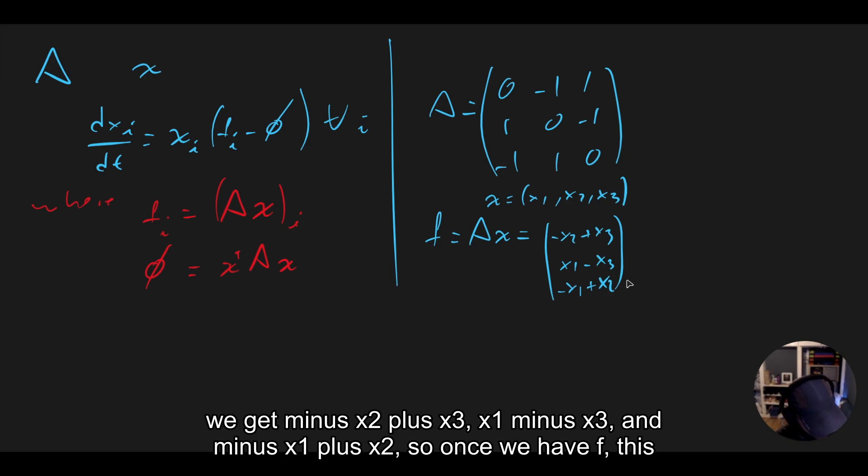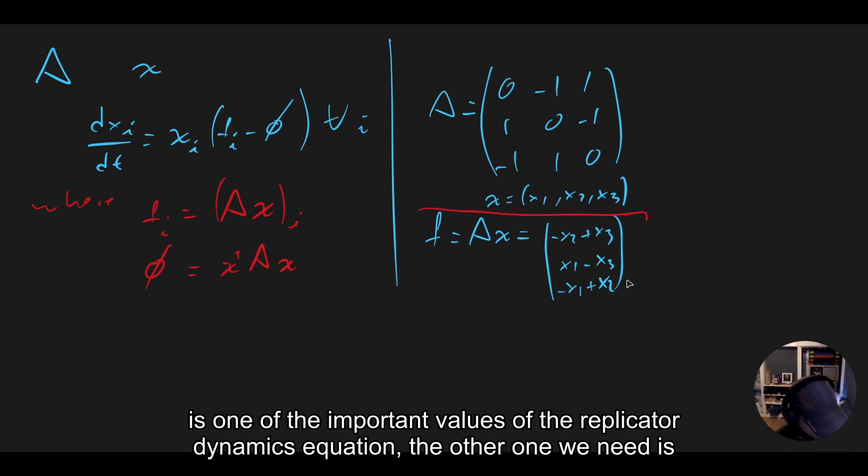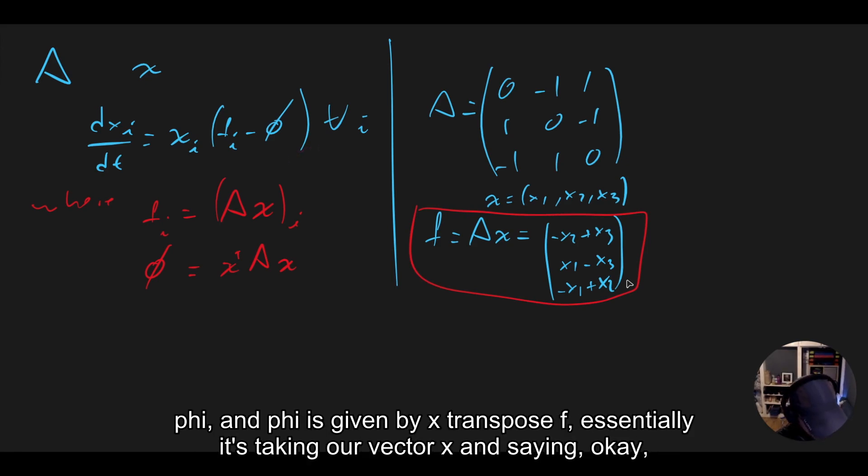So once we have F, this is one of the important values of the replicator dynamics equation. The other one we need is phi, and phi is given by x transpose F.